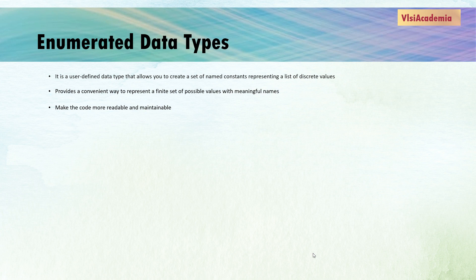In a nutshell, the enum data type is like having your own custom set of names for a group of related items that makes your code more organized, easy to understand, and maintainable.